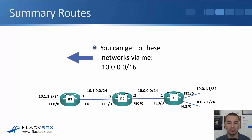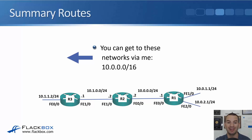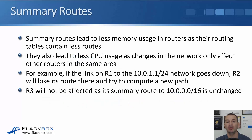Just like with static routes, we can use summary routes with our dynamic routing protocols as well. In the same example, R2 learns about the 10.0.1.0/24 and 10.0.2.0/24 networks, but rather than advertising those two /24s to R3, we can configure it to send a summary route of 10.0.0.0/16 instead. Summary routes lead to less memory usage in routers as their routing tables contain fewer routes. In large networks this makes a big difference. They also lead to less CPU usage, as changes in the network only affect other routers in the same area.